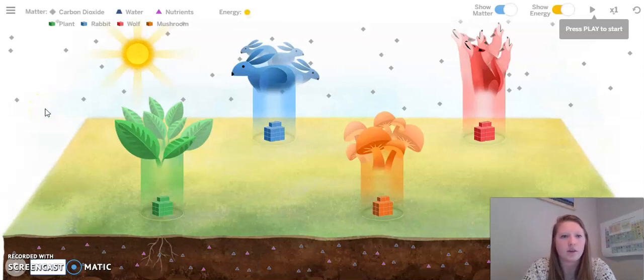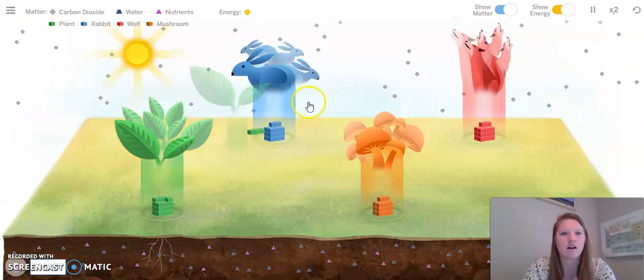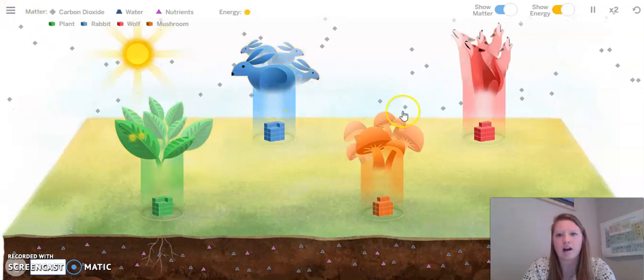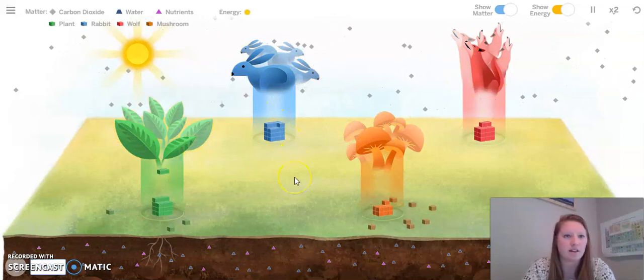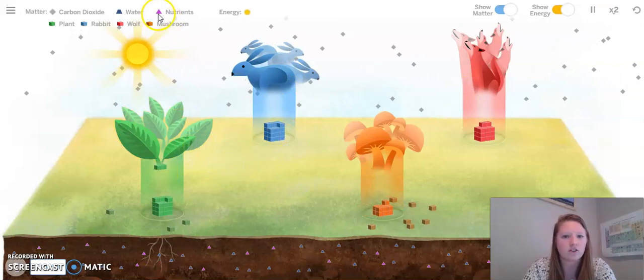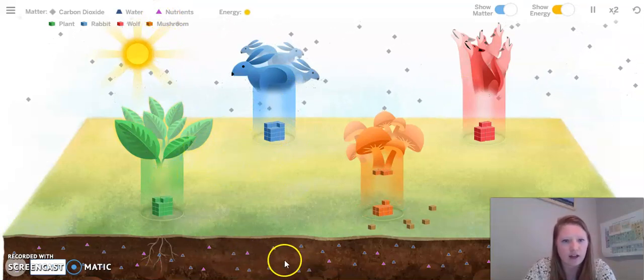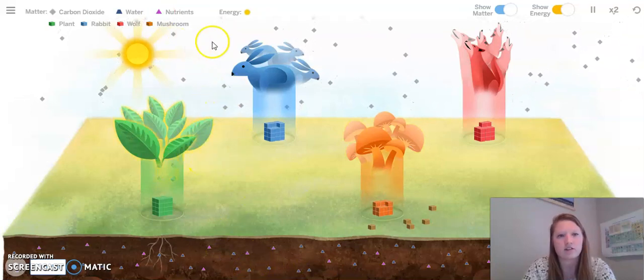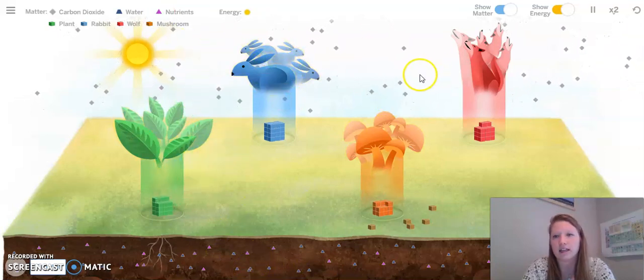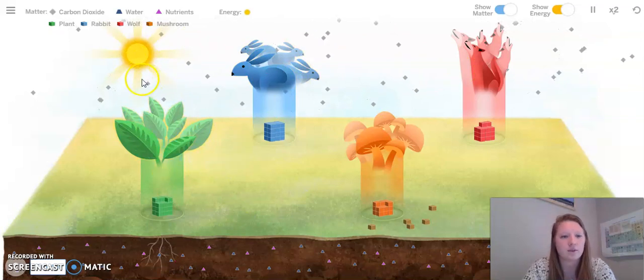Okay, so as we can see, we have a couple different things going on with this simulation. We have plants over here, rabbits, mushrooms, and wolves. We can also see that the cubes represent the matter. Triangles are nutrients, which we can see in the soil as well as water. We can also see carbon dioxide, these gray diamonds that are in the air, and our sun represents our energy.